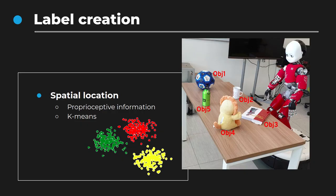As you can see in the image, for example, the ball will be assigned the label 'object 1' as it was to the right of the robot, while the book, for example, will have a different label. We separate the objects using this information with a clustering algorithm that provides generic labels to retrain the object detection network.